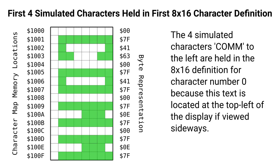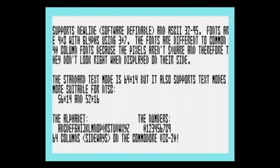However, if we use an 8×16 character definition, then we can fit four sideways characters — so four 4-bit characters — into each 8×16 character definition, and therefore we can reduce our number of real rows displayed to 16, which allows us to display more columns.